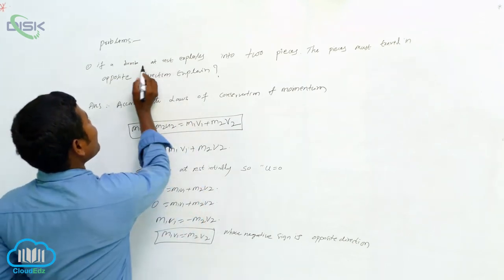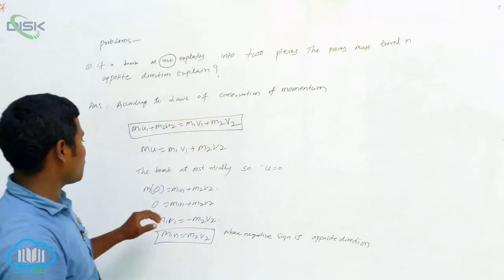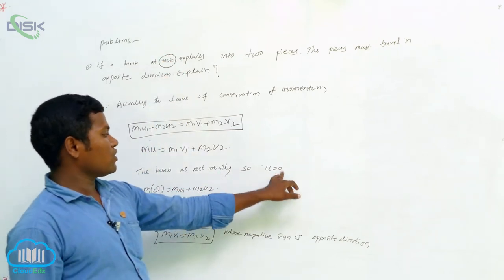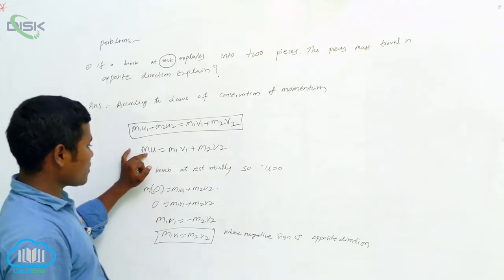What is the word here? It is at rest. Rest means initially it was at the rest position. Due to that, I have taken U is equal to zero. Then wherever U is there, I am substituting U equals zero.